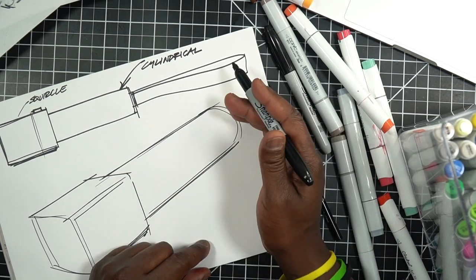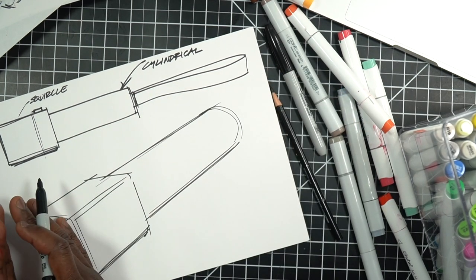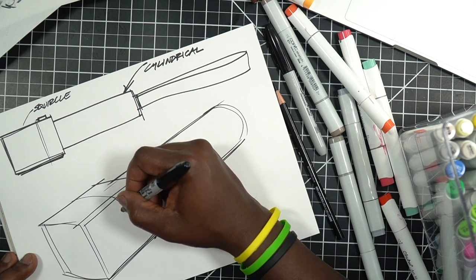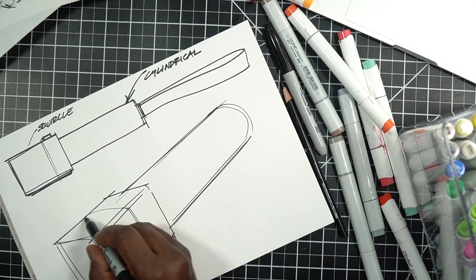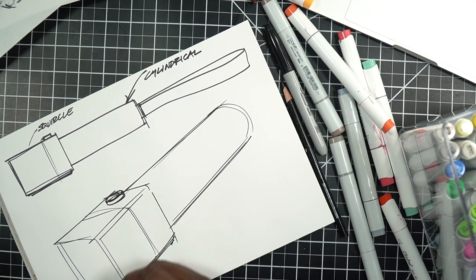This one tends to open up more because you're getting closer to the vanishing point. So the closer to the vanishing point, the larger the degree. The further away you are, the smaller the degree. Those things can help you as you're drawing. We have our little button on top here.